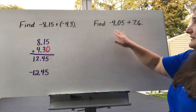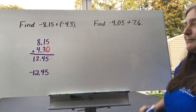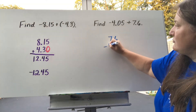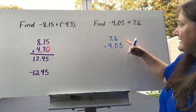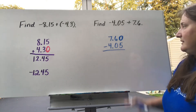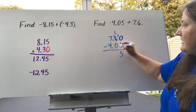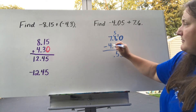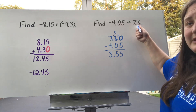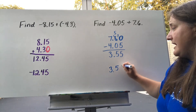Let's try another one. This time the numbers have different signs: negative 4 and 5 hundredths plus 7 and 6 tenths. Since they have different signs, I'm going to subtract them. I put the larger number, 7 and 6 tenths, on top, and subtract 4 and 5 hundredths. I fill in a zero in the empty slot. Starting subtraction: 0 minus 5 — I have to borrow, making it 10 minus 5 which is 5. Then 5 minus 0 is 5, bring down the decimal, 7 minus 4 is 3. Going back to the original problem, the greater absolute value belongs to 7 and 6 tenths, which is positive, so my answer is positive 3 and 55 hundredths.